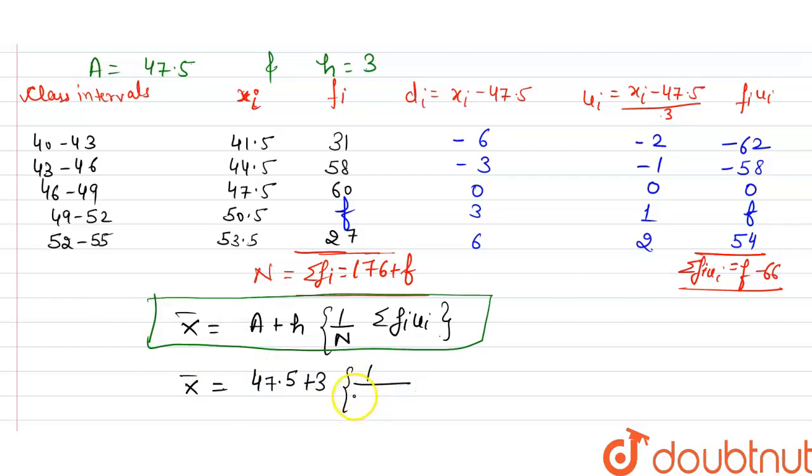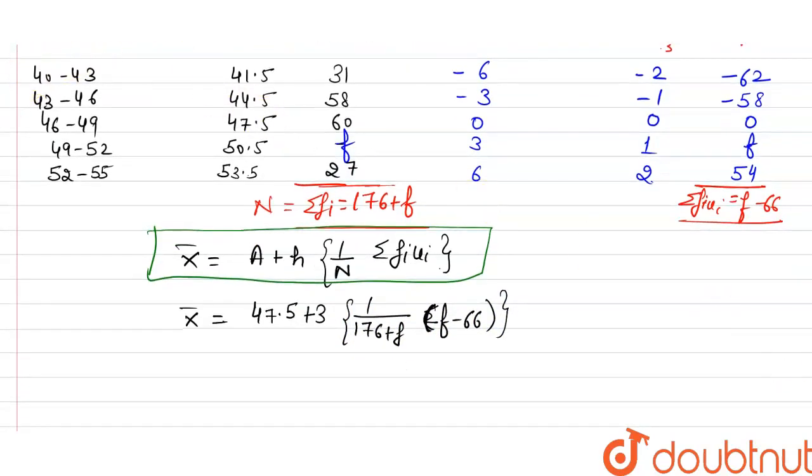times f minus 66. And it is given that the value of x̄ is 47.2. That is equal to 47.5 plus 3 times 1 divided by 176 plus f, multiply f minus 66.